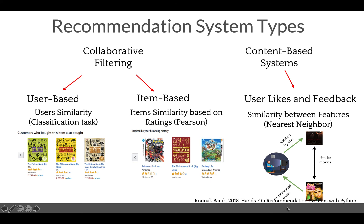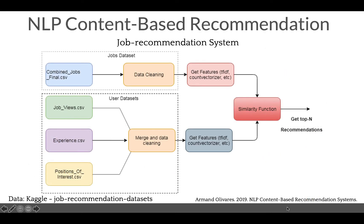The content-based system provides recommendations based on a user profile and also metadata on a particular item. It applies user likes, user feedback, and similarities based on item features. To build a good collaborative filtering system, you need data on a large number of purchases from a large number of users.